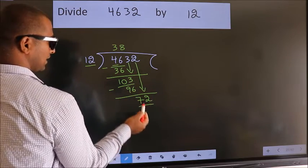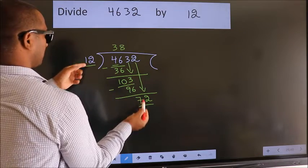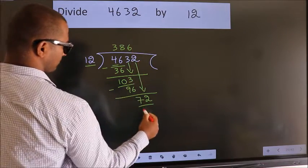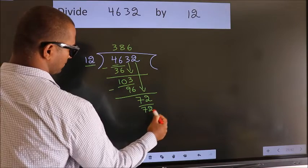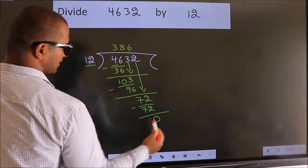72. When do we get 72 in the 12 table? 12 times 6 is 72. Now we subtract. We get 0.